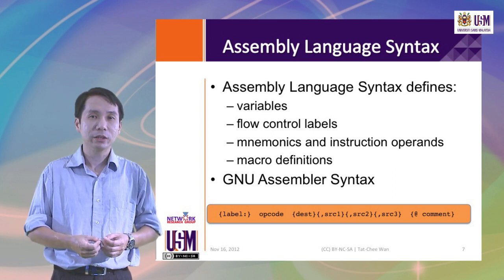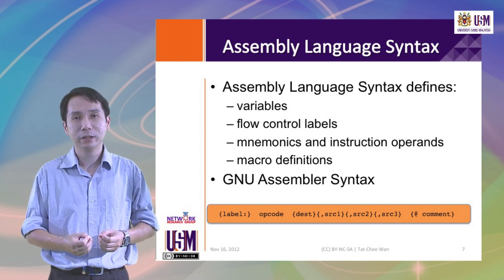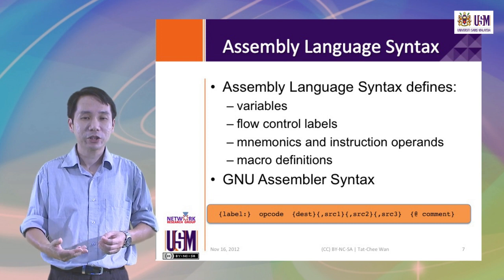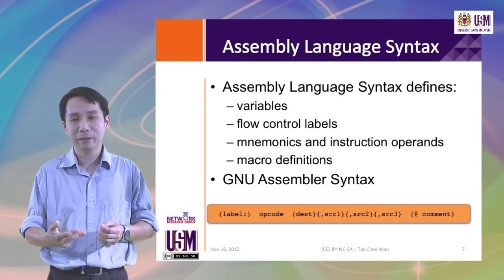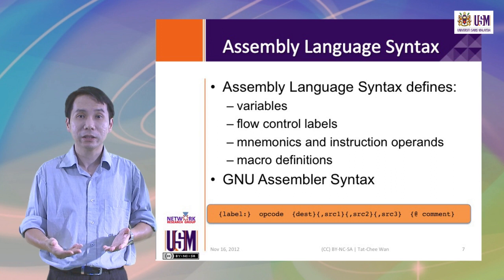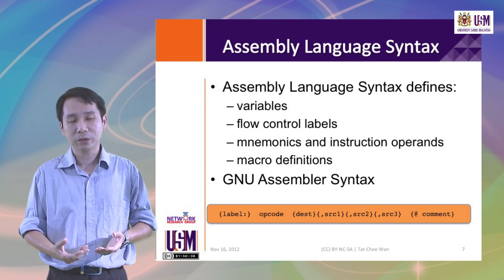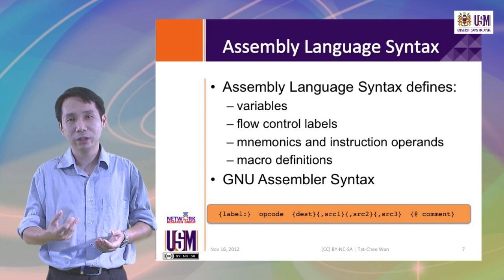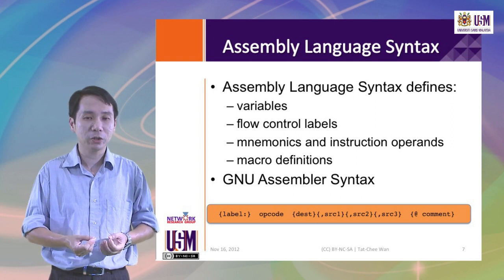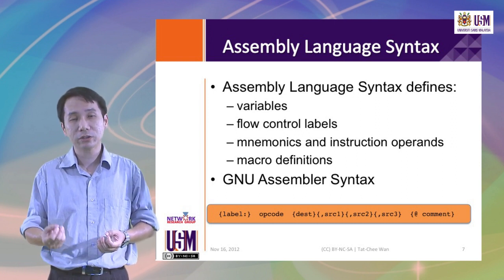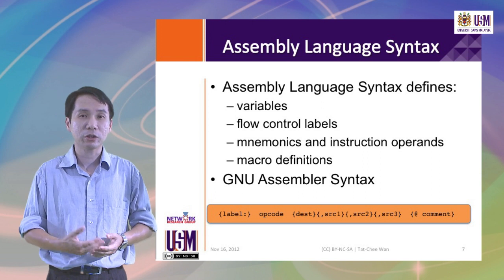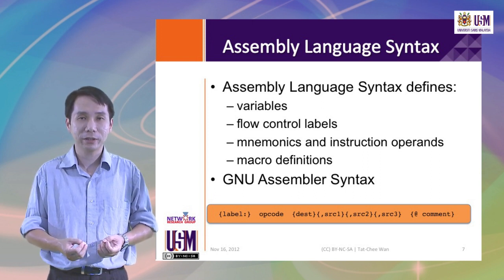We will also look into the specific features of the new assembler, which is the assembler we will be using in this course. A symbolic assembly language statement includes the optional label portion, the opcode which defines the instruction we want to invoke, then the operands associated with this opcode — which may include a destination, several source registers or source operands — and finally an optional comment which describes the intent of this statement.